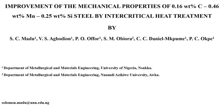Improvement of the mechanical properties of 0.16 wt% carbon, 0.46 wt% manganese, 0.25 wt% silicon steel by intercritical heat treatment. By S. C. Madu, V. S. Agbodion, P. O. Offor, S. M. Obiora, C. C. Daniel-Mkpume, and P. C. Okpe. Department of Metallurgical and Materials Engineering, University of Nigeria, Nsukka, and Department of Metallurgical and Materials Engineering, Nnamdi Azikiwe University, Awka.